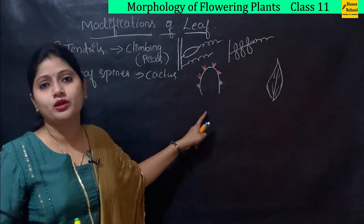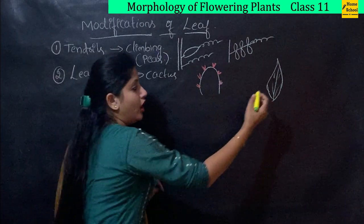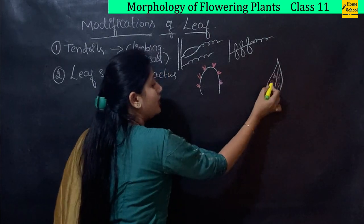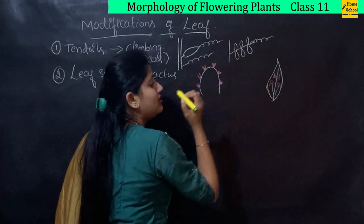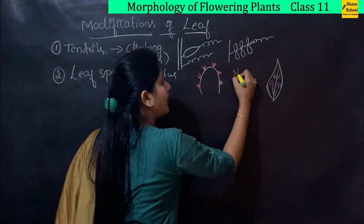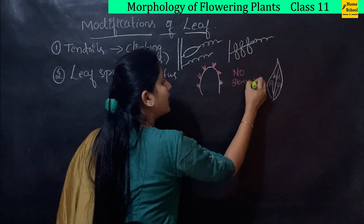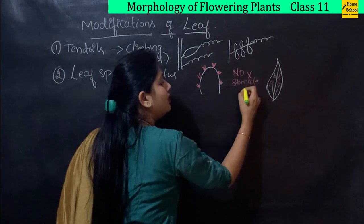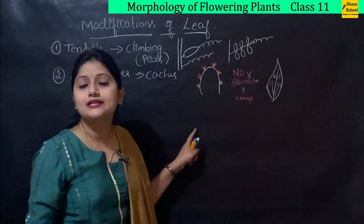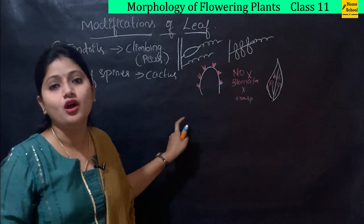One important point to remember is stomata on the leaf surface. If leaves are modified into spines, there are no stomata. No stomata means no transpiration, so water is saved and there is no evaporation of water.